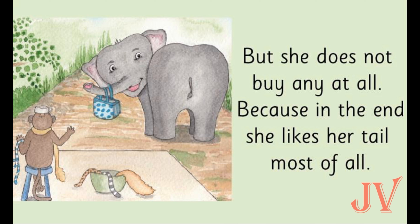In this picture we can see Banjo is very happy. She likes all the tails in the shop. But what does Banjo do at the end? Banjo does not buy any tail at all, because after seeing all the tails she feels her tail was the most special, as she likes her own tail most of all. So children, this was the story. Now we will go to the reading part.